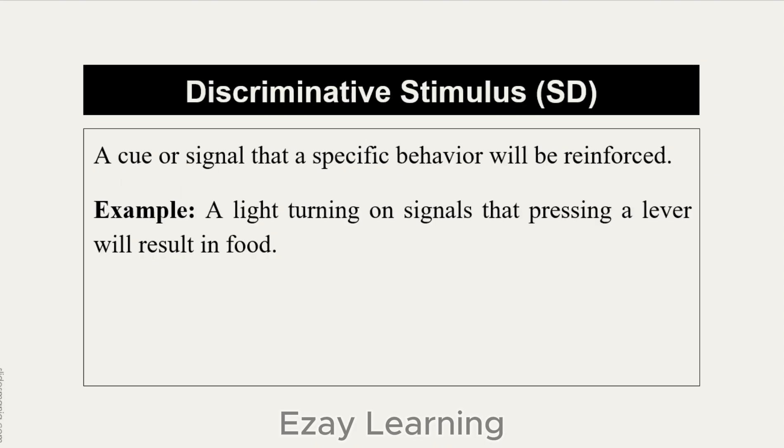Discriminative stimulus refers to a cue or signal that a specific behavior will be reinforced. It is a change in the environment that signals the availability of a reinforcer — for example, pressing a lever will result in food. If a stimulus is not giving you a cue about the availability of a reinforcer, it will not be the discriminative stimulus; instead it will be the delta stimulus. The discriminative stimulus signals that the behavior will be reinforced and signals the availability of the reinforcer.